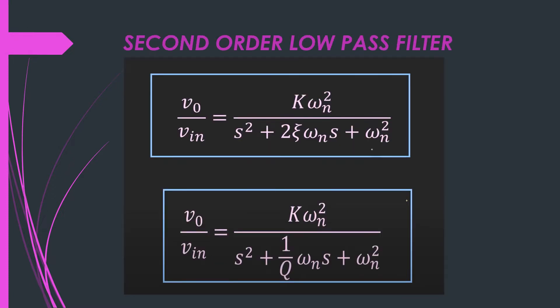Now if you see the transfer function of any 2nd order low pass filter, it can be given by an expression where K represents the gain of the particular filter and omega N represents the cutoff frequency of that particular filter. If you write this expression in terms of the quality factor Q, it can be written in a corresponding form. Let us understand how to get this transfer function for the 2nd order low pass filter and then we will see the criteria for the Butterworth filter design.